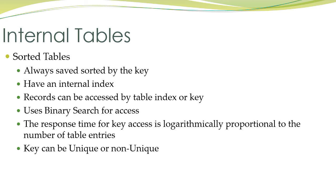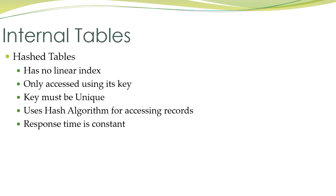The last category is hashed tables. Hashed tables do not have any linear index — they are only accessed using a key, and the key must be unique. They use a special algorithm called a hash algorithm for accessing records from the database table. The response time is not proportional to the number of entries; it is always constant.